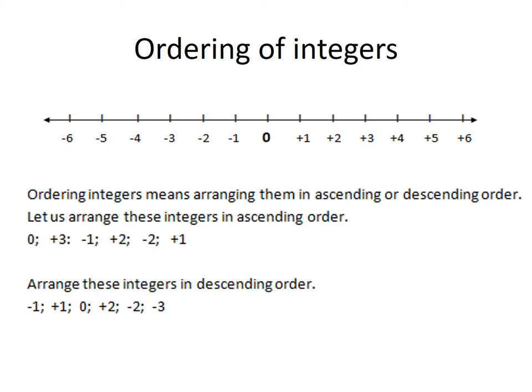Now we're going to arrange integers in descending order. Descending order means starting from the biggest to the smallest. You'll notice that our positive numbers are bigger and our negative numbers are smaller. Looking at negative 1, positive 1, 0, positive 2, negative 2, and negative 3 — our biggest one is positive 2. So: positive 2, positive 1, 0, negative 1, negative 2, negative 3.